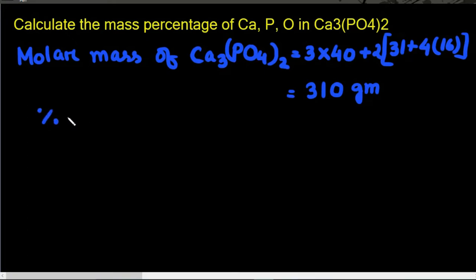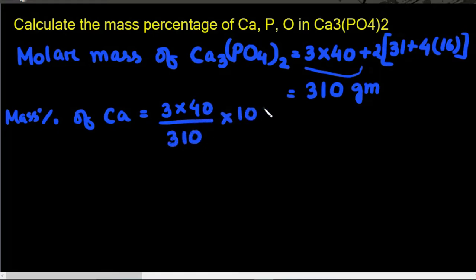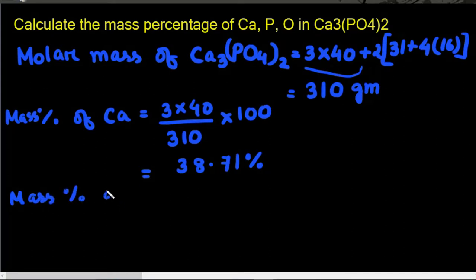Now we will find the mass percentage of the individual atoms. Mass percentage of calcium is equal to 3 into the mass of calcium, divided by the molar mass of calcium phosphate, into 100. This is equal to 38.71%. So the mass percentage of calcium is 38.71%.